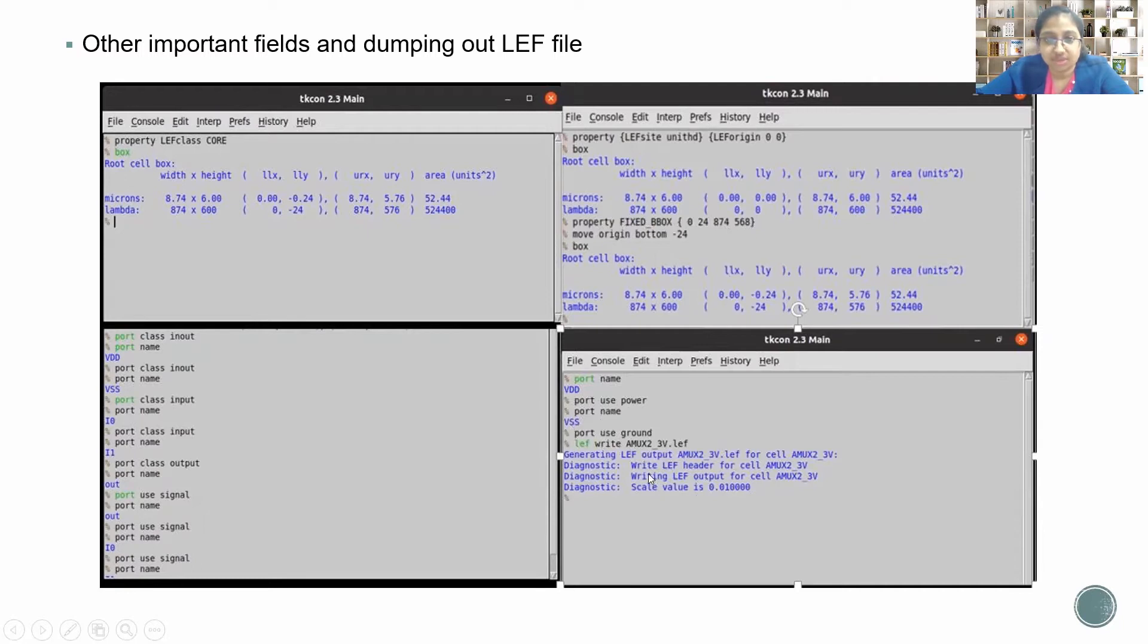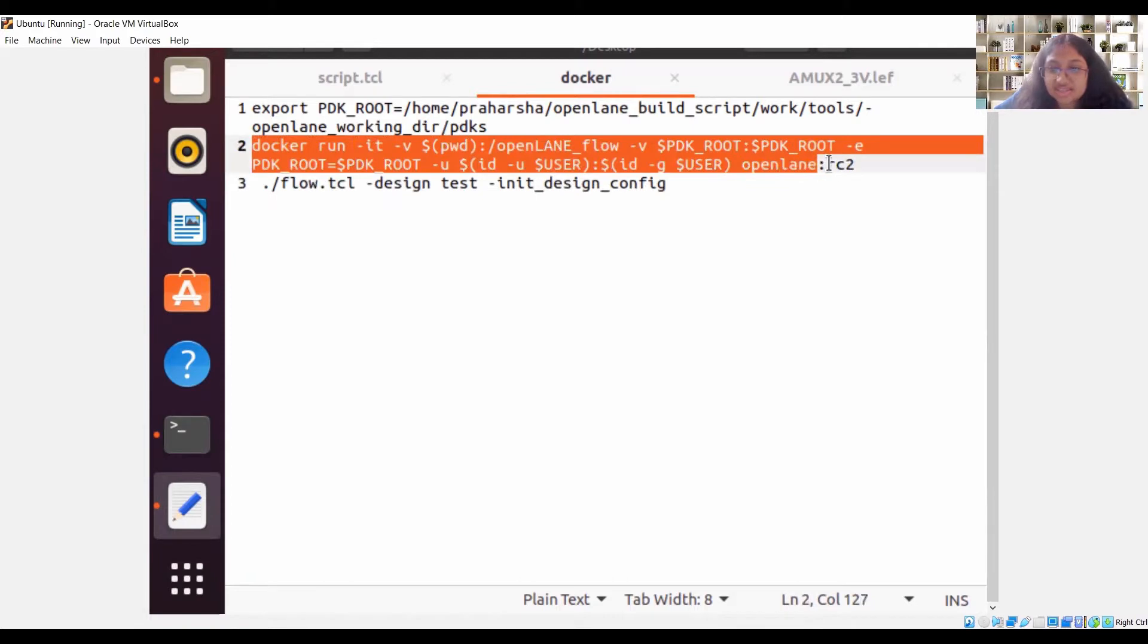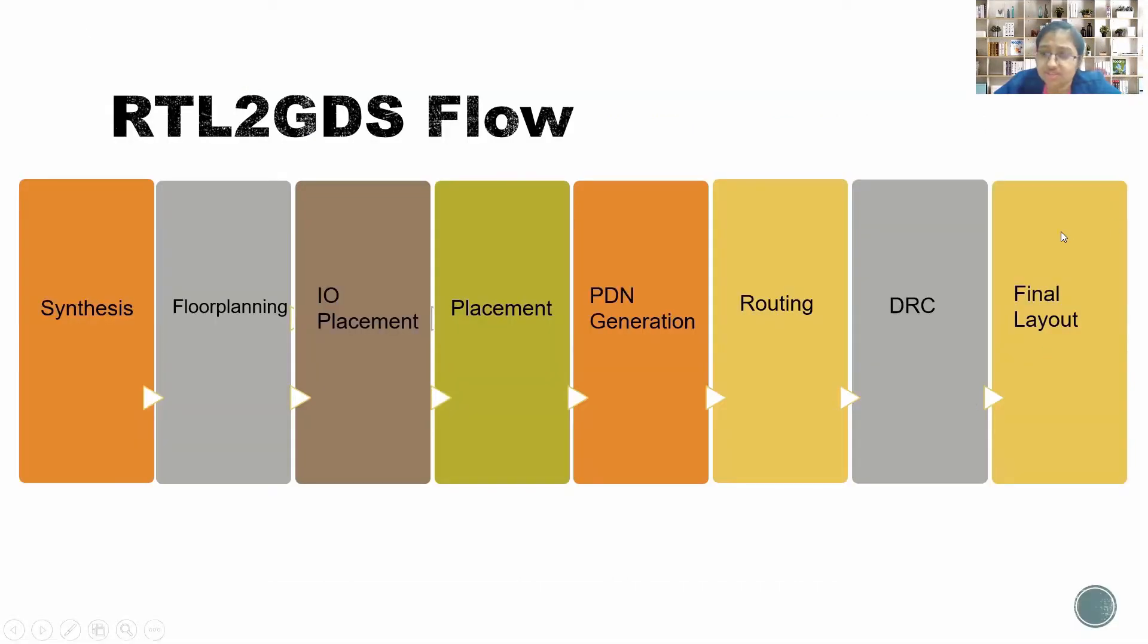Now that we have dumped out our LEF file, the LEF file is ready to be used in the OpenLane flow. Next, apart from this, I also need to run the docker. The docker command is this, so we need to completely copy and paste as it is, so that comes to the end, the final layout stage.